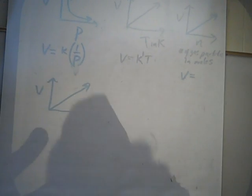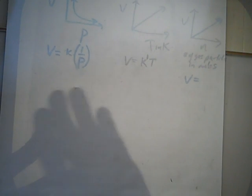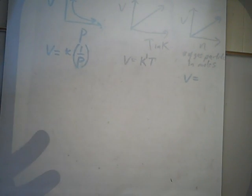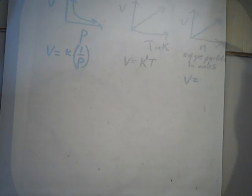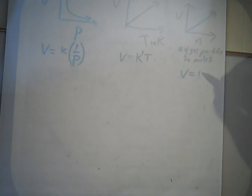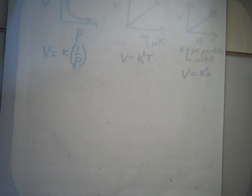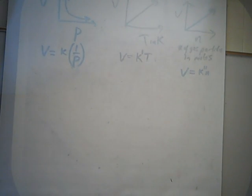Another question: in the volume and number of gas particles relationship, can the slope go the other way — could it be negative? No, it has to be a positive slope. So V equals K double prime times N. If we wanted to, we could do a lab to measure K double prime.